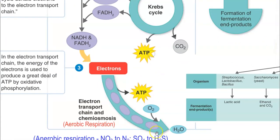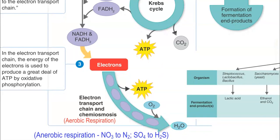You can see the reducing equivalents being fed into the electron transport chain, where they are oxidized and, with the help of a proton motive force, ATP is synthesized. The final or terminal electron acceptor in aerobic respiration is oxygen.